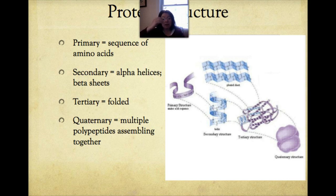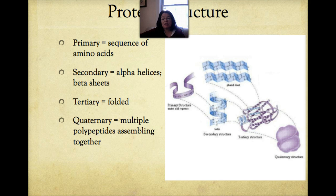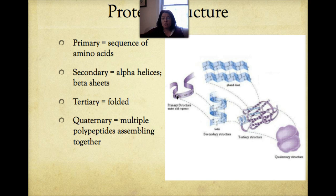The secondary structure refers to the first folding episodes. There are two general secondary structures: an alpha helix and a beta sheet. Looking at the diagram, the left side shows a purple ribbon demonstrating the primary structure — just a chain of amino acids in sequence. Once that chain begins to fold, it can assume two conformations: an alpha helix, which is helical, or a beta pleated sheet, which is a more two-dimensional, sheet-like structure.